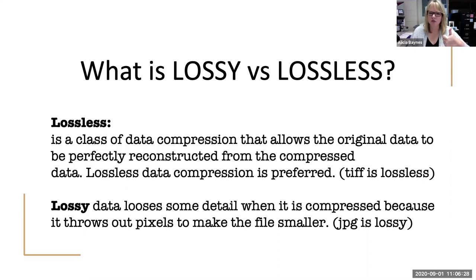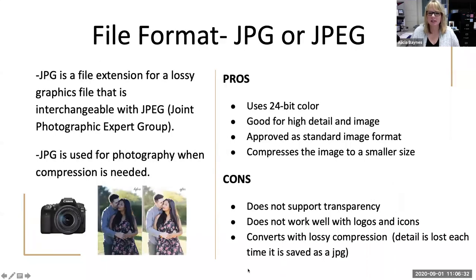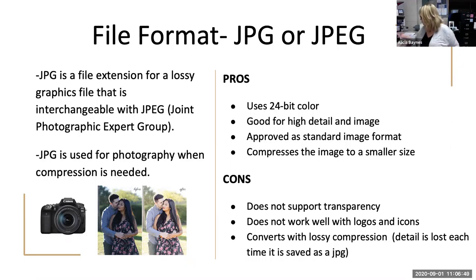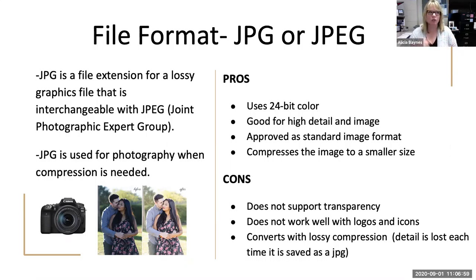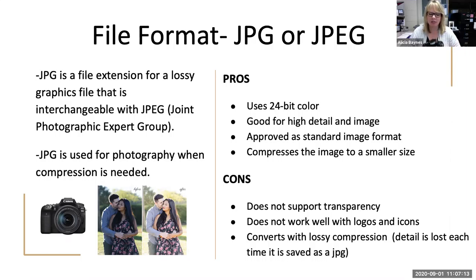The next format we're going to discuss is JPEG. This is one you're probably pretty familiar with. JPEGs are going to come from your phone, from your pictures, and from a digital SLR camera like a Canon or a Nikon. These are going to be native to a digital SLR or camera. JPEGs are most often used for photography. You may see JPG or JPEG — those are used interchangeably.